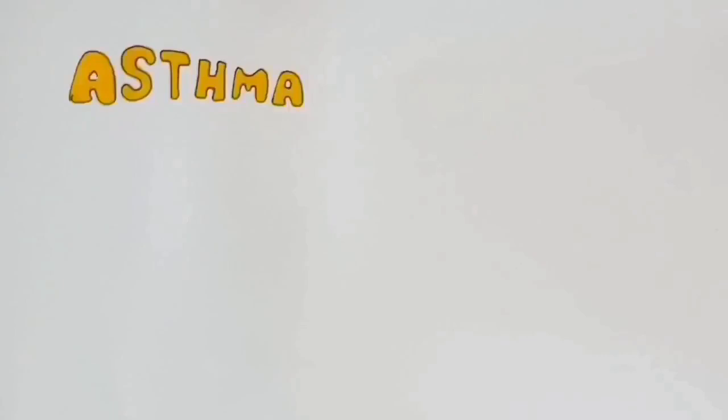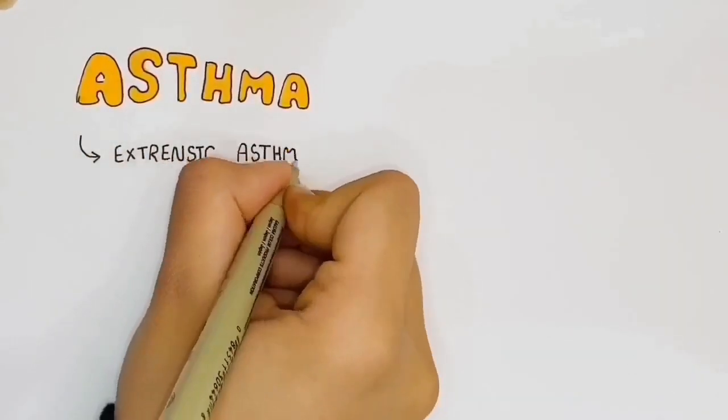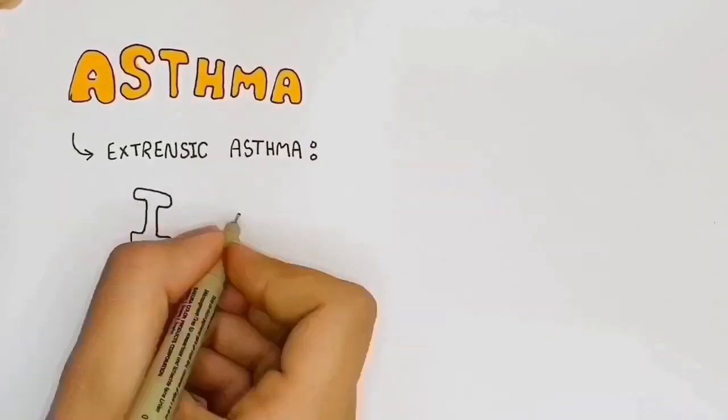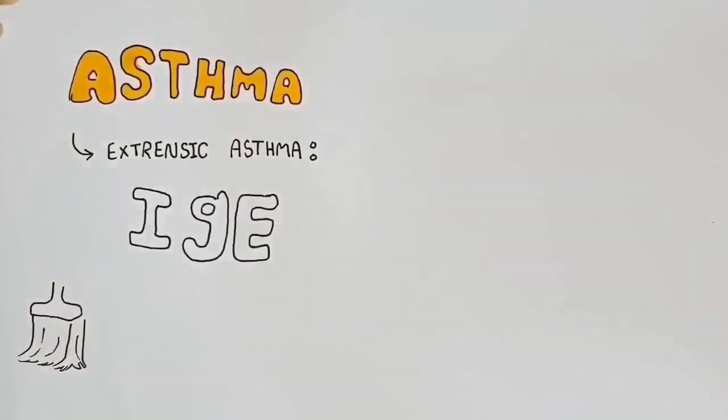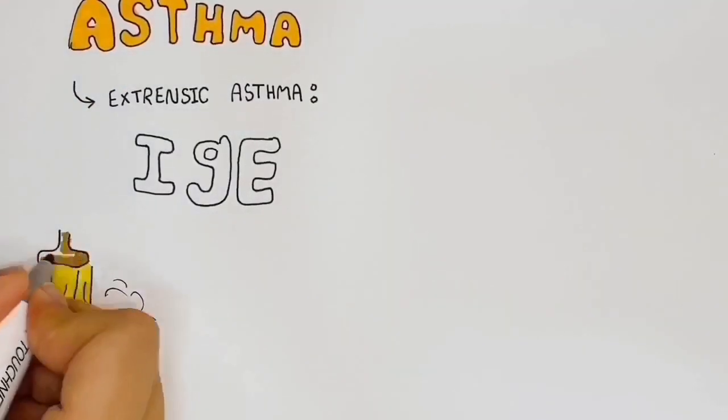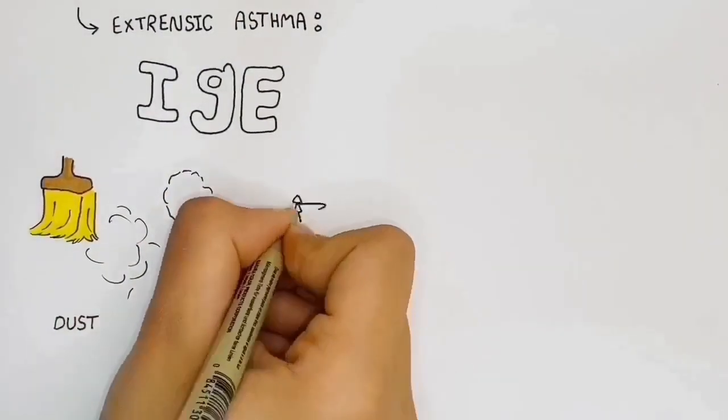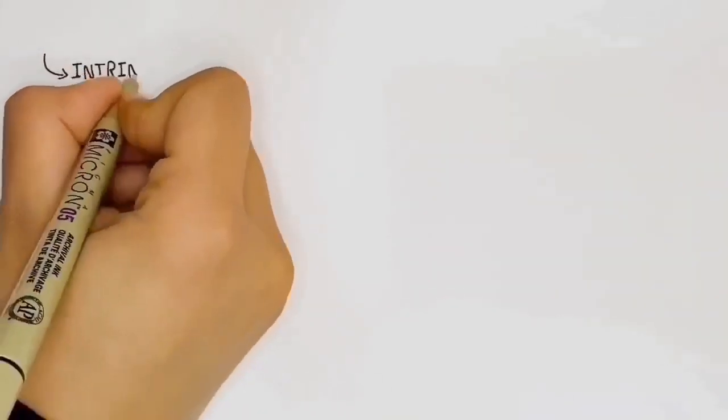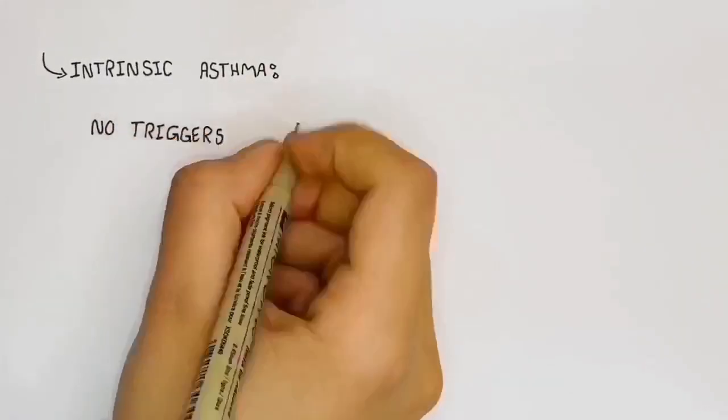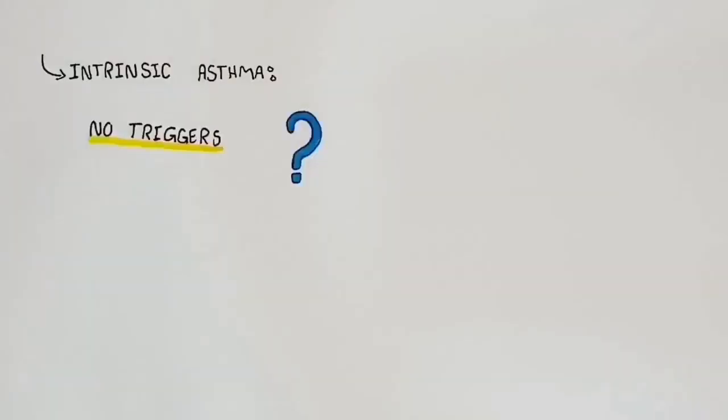Asthma is classified into extrinsic and intrinsic. Extrinsic in which a patient is atopic and also produces immunoglobulin E to environmental triggers, such as dust, smoke, insects, and air pollution. While intrinsic is not related to atopy or environmental triggers.